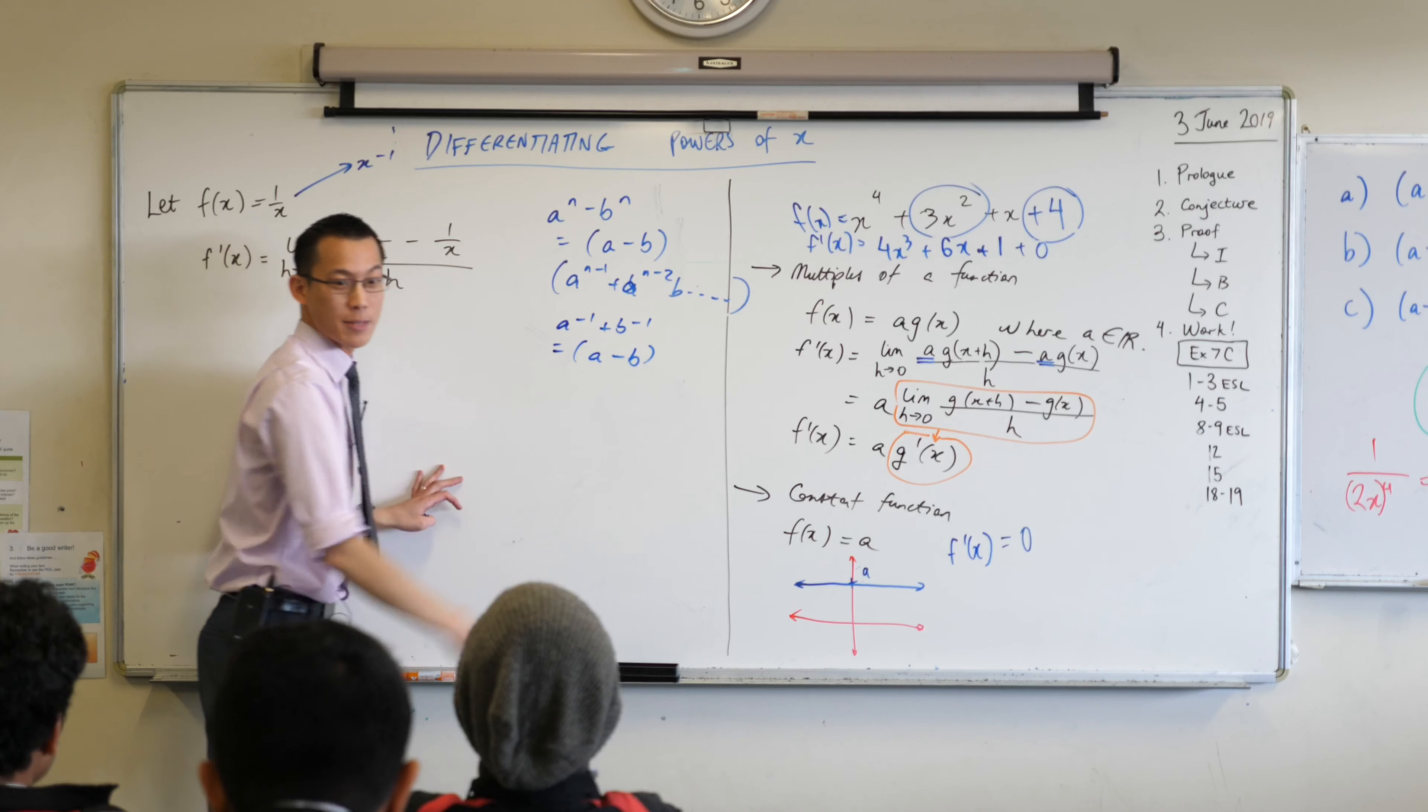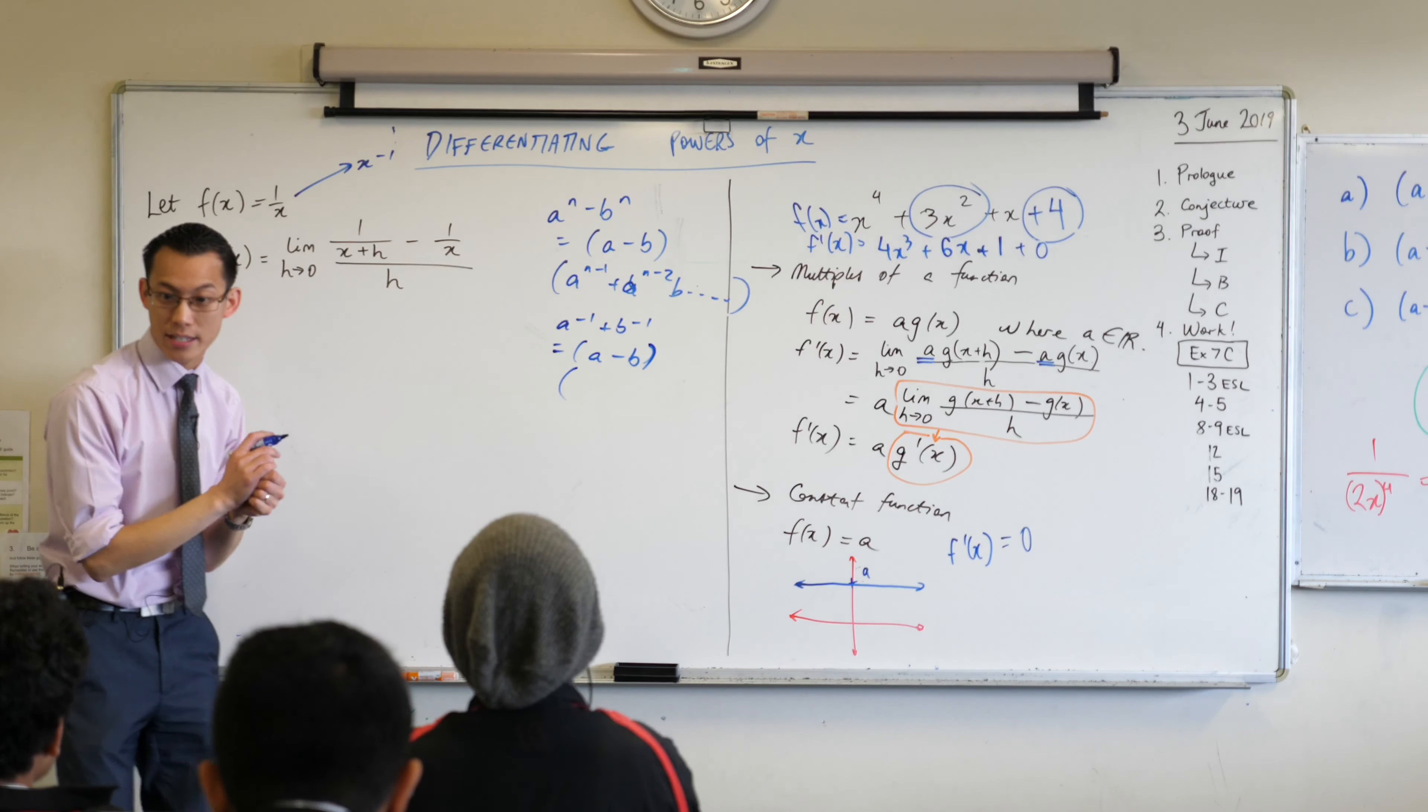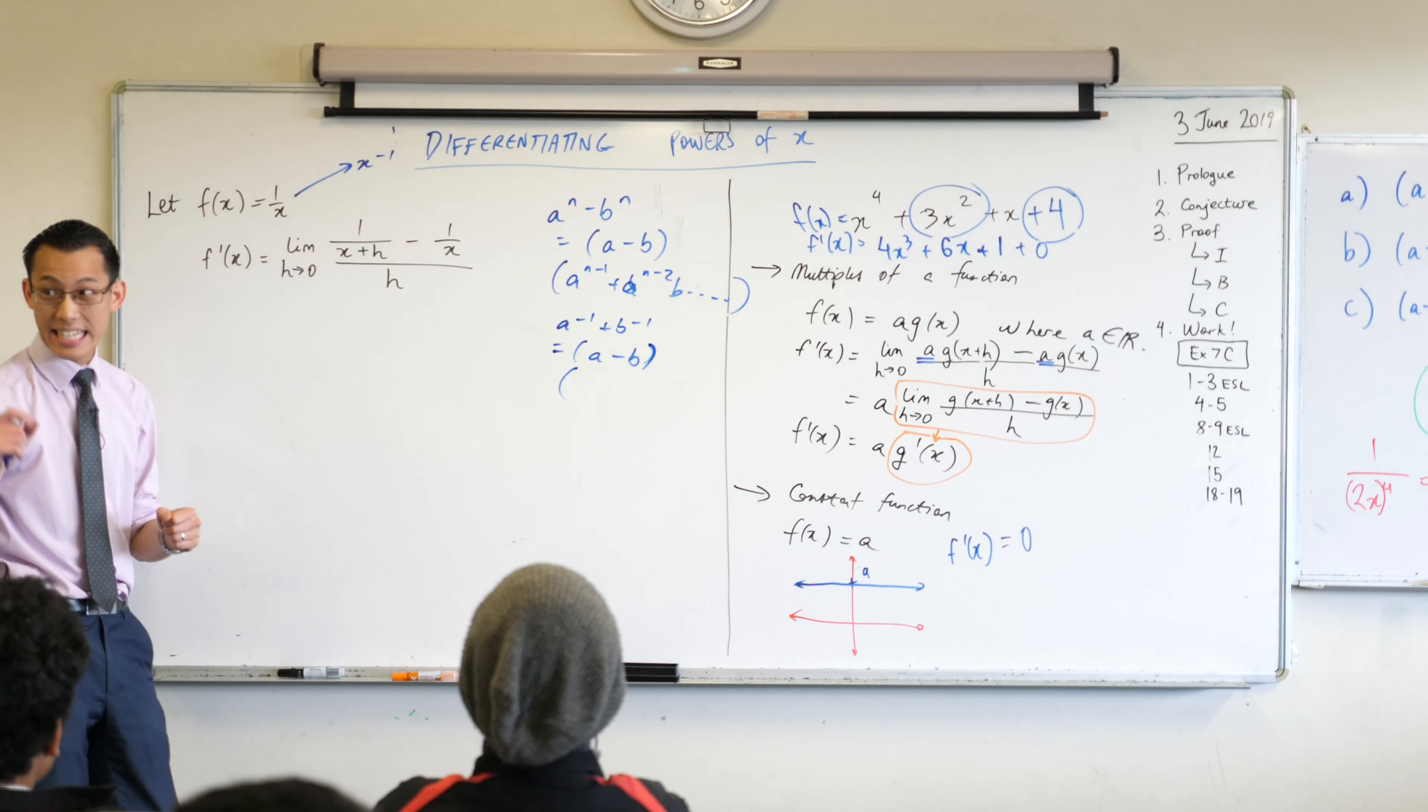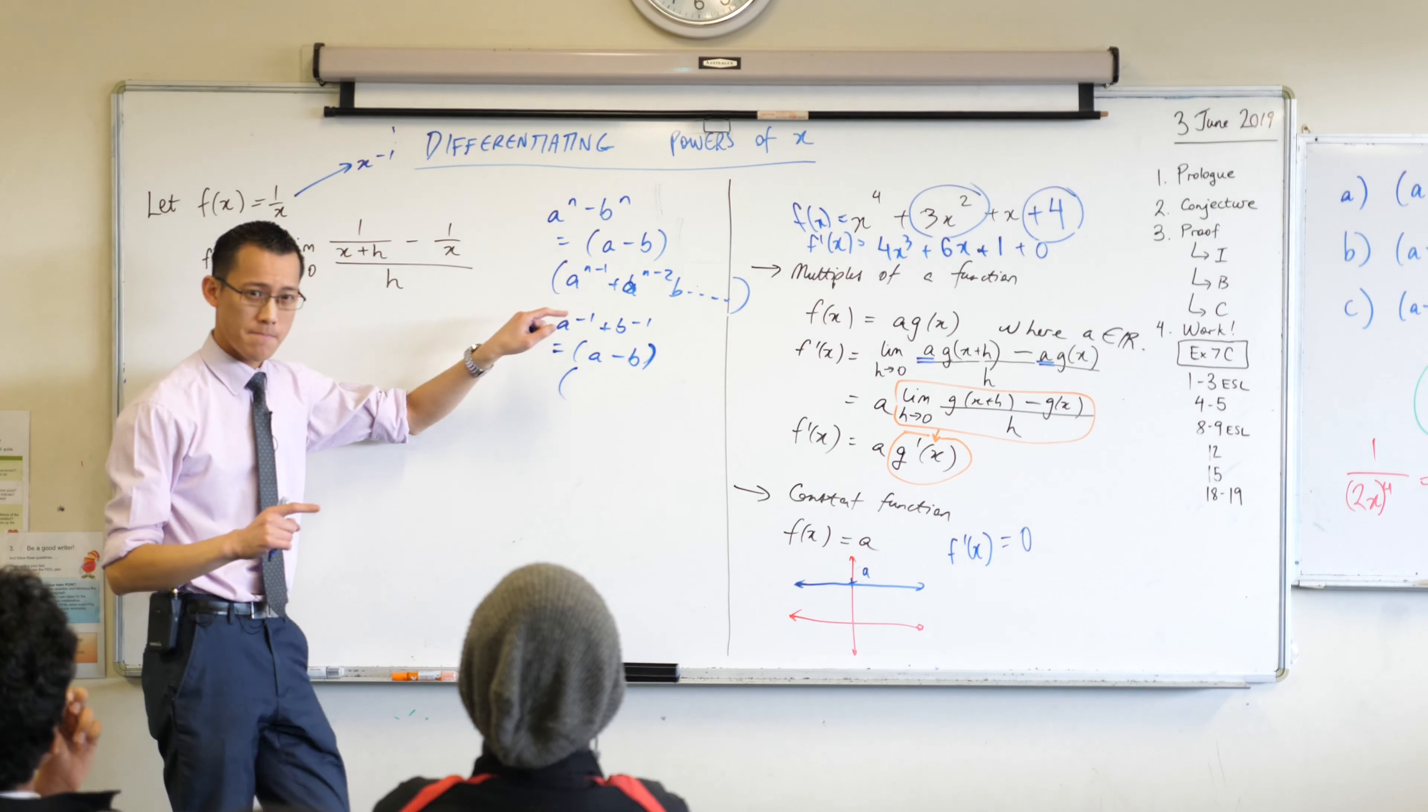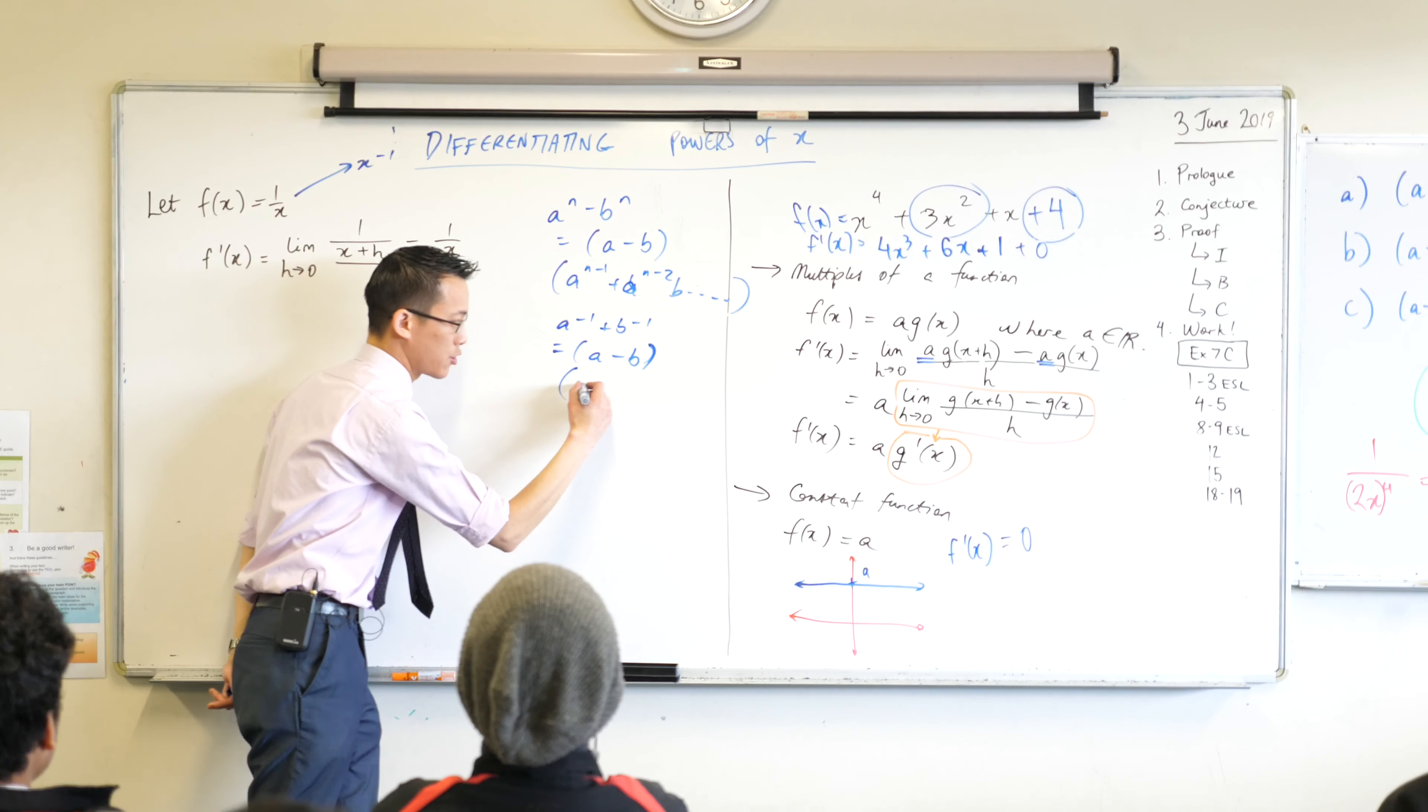If I say it starts with a minus b, and then I start to say okay well let's now establish the pattern. In this case what's my n? It's negative one, right? So what will the first term be if n is negative one? The first one should be negative two.